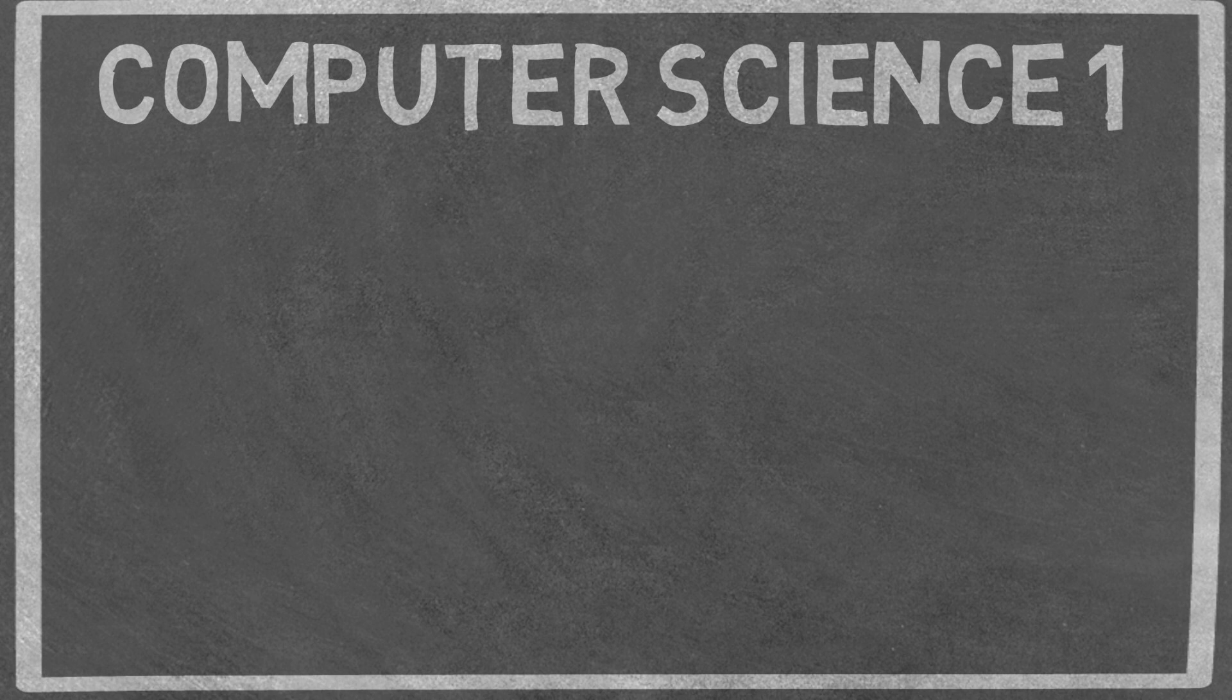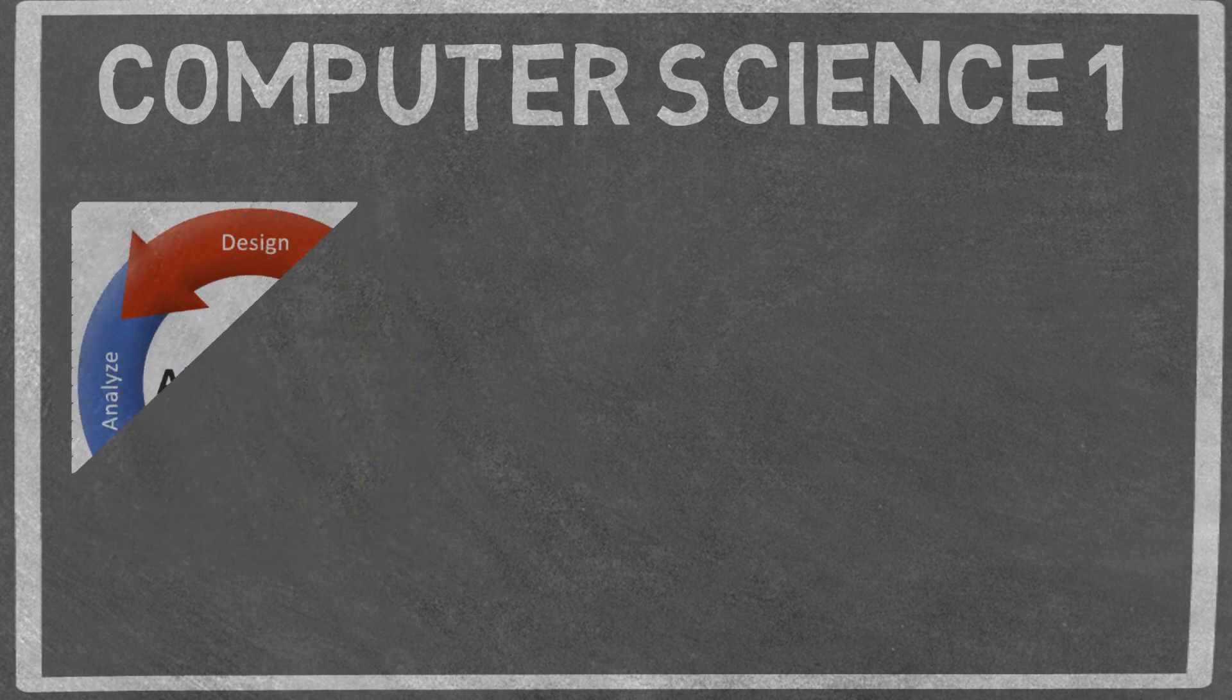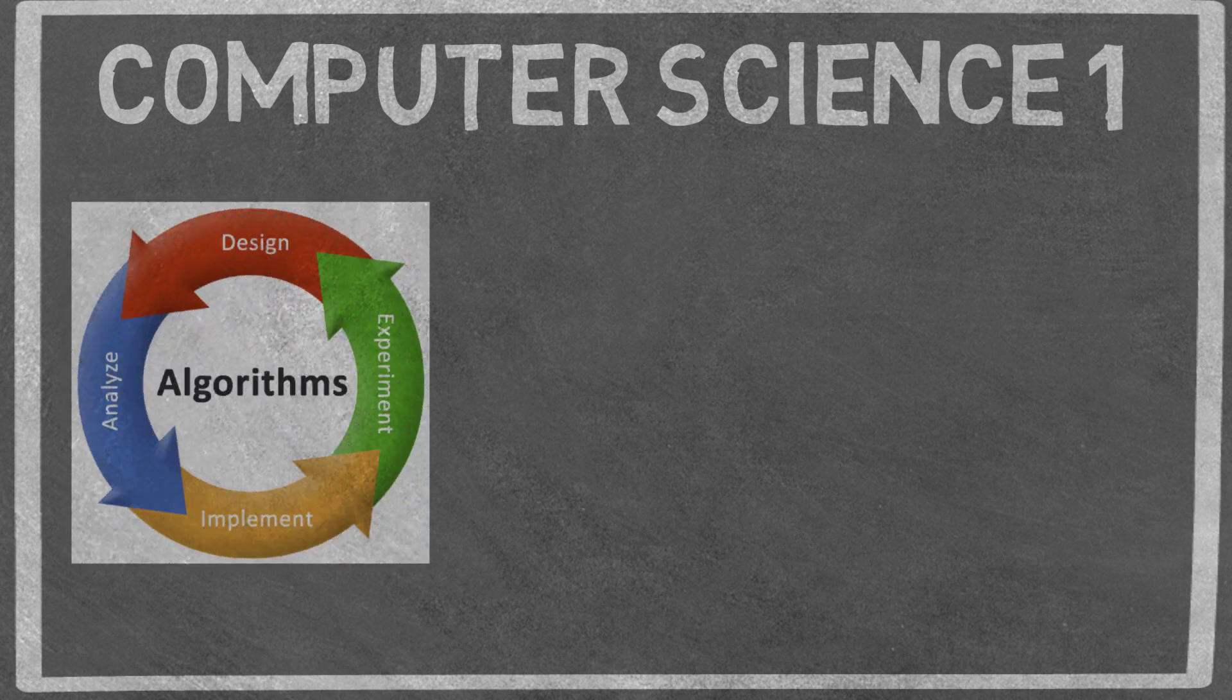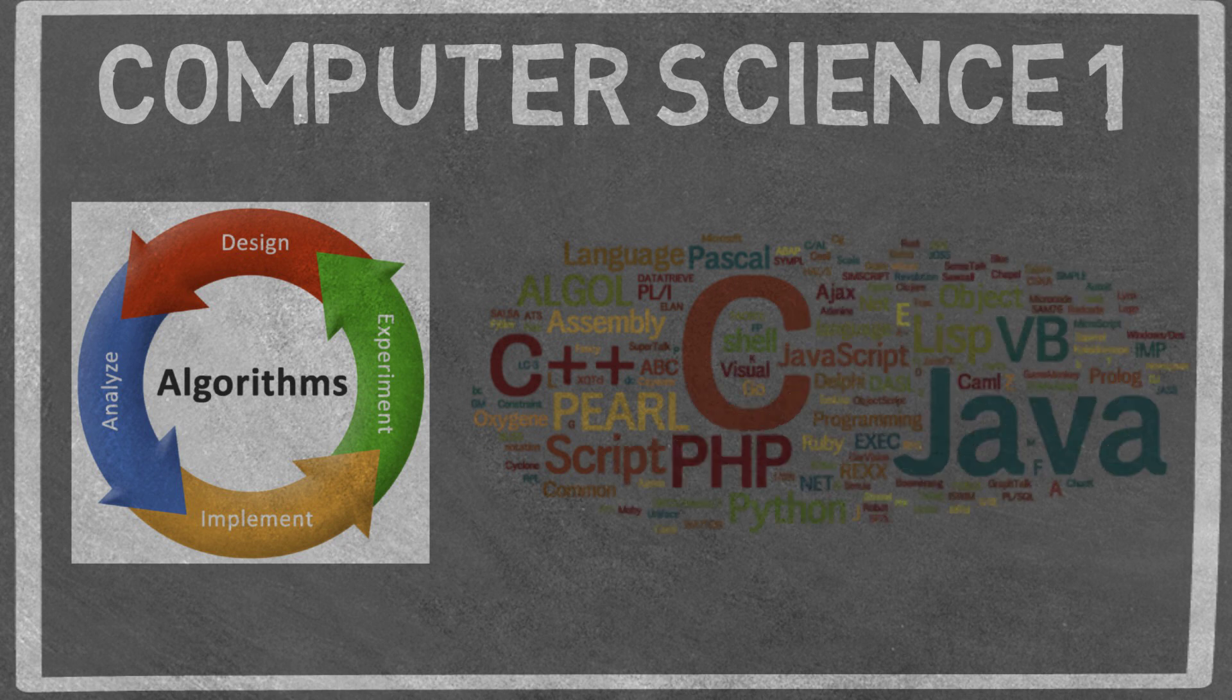Number four, computer science introduction. This class will be an introduction to algorithms, their representation, design, structuring, analysis, and optimization. This is typically done in a high level programming language like Java, Python, or C++.